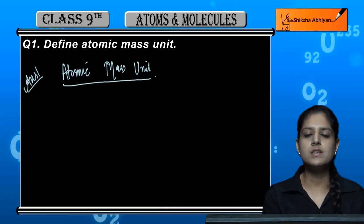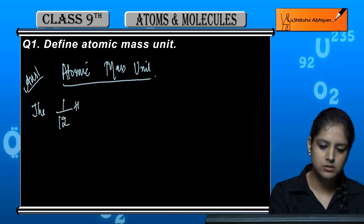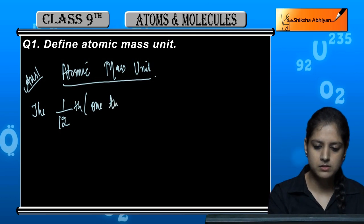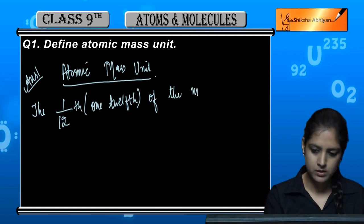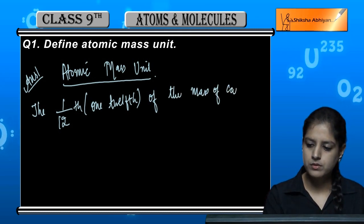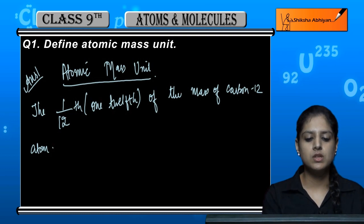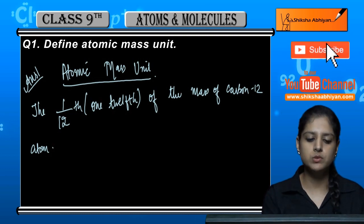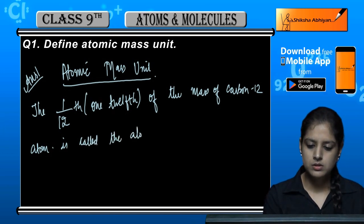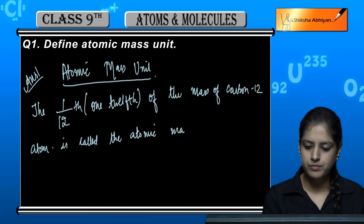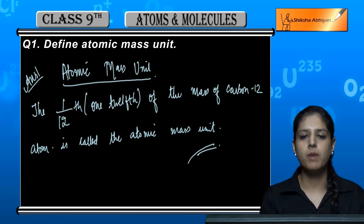What is atomic mass unit? It is 1/12 of the mass of carbon-12 atoms. The 1/12 of the mass of carbon-12 atoms is called the atomic mass unit.